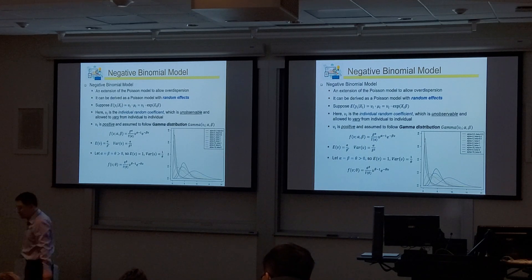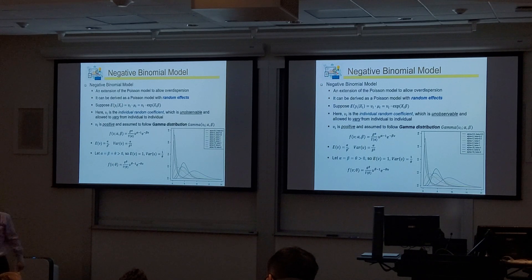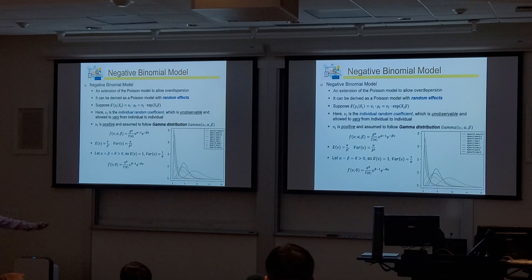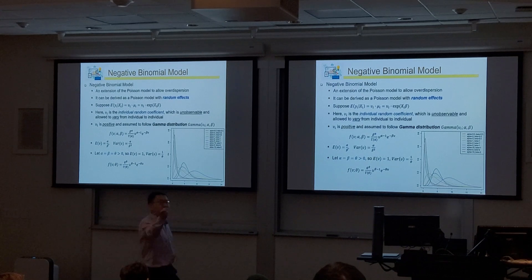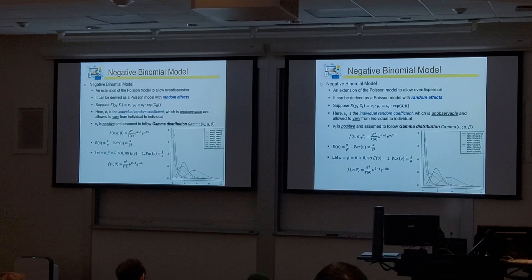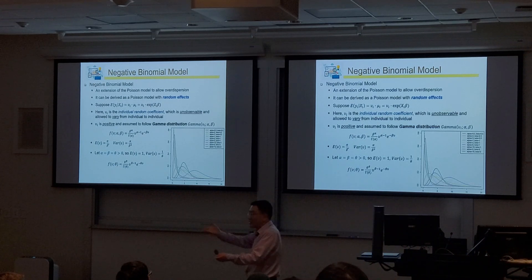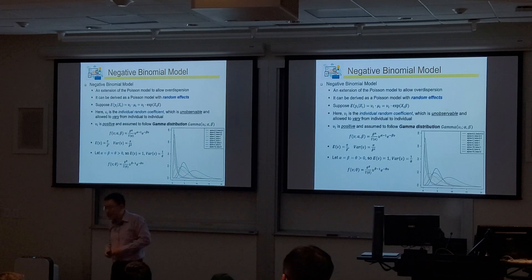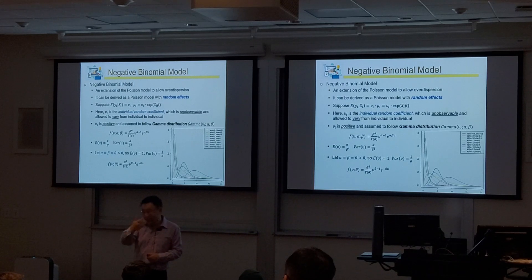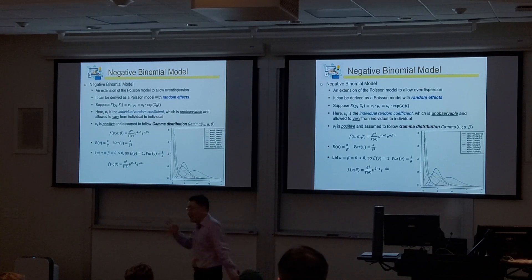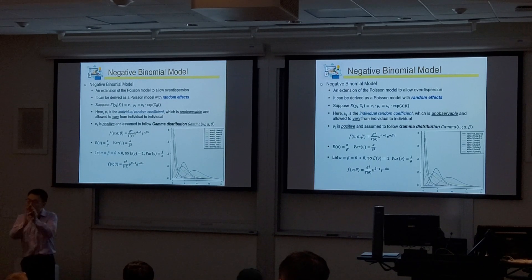A student asks: why use Poisson at all if negative binomial incorporates Poisson? Good question. Simplicity is always a benefit — Poisson is easier and faster to estimate. As a general principle, if the simpler model is correct, we always prefer it because it is more statistically efficient: the variance of the estimator is smaller. A more complex model always has larger estimator variance. We only introduce complexity when the simple model is incorrect.